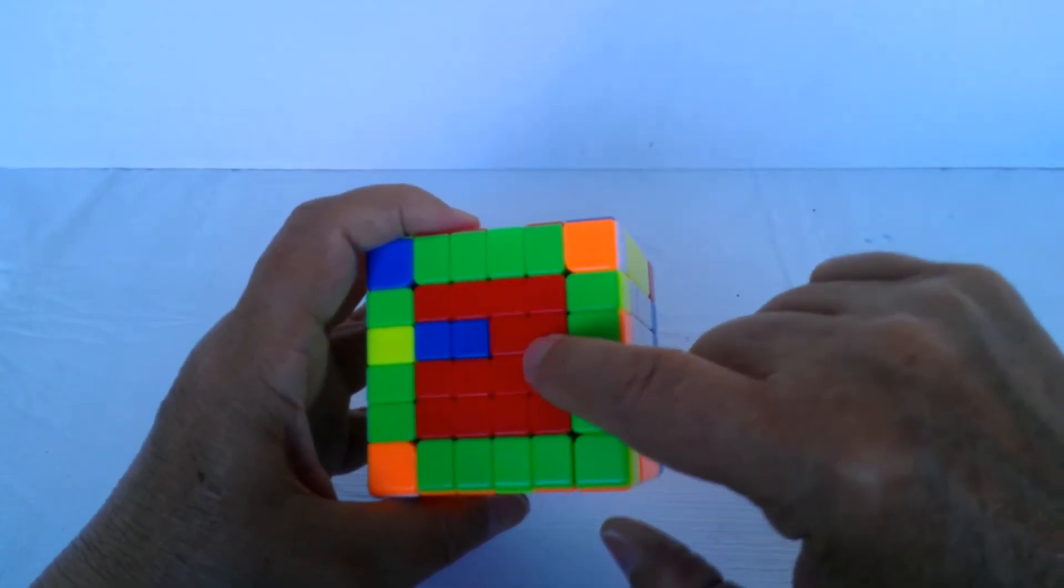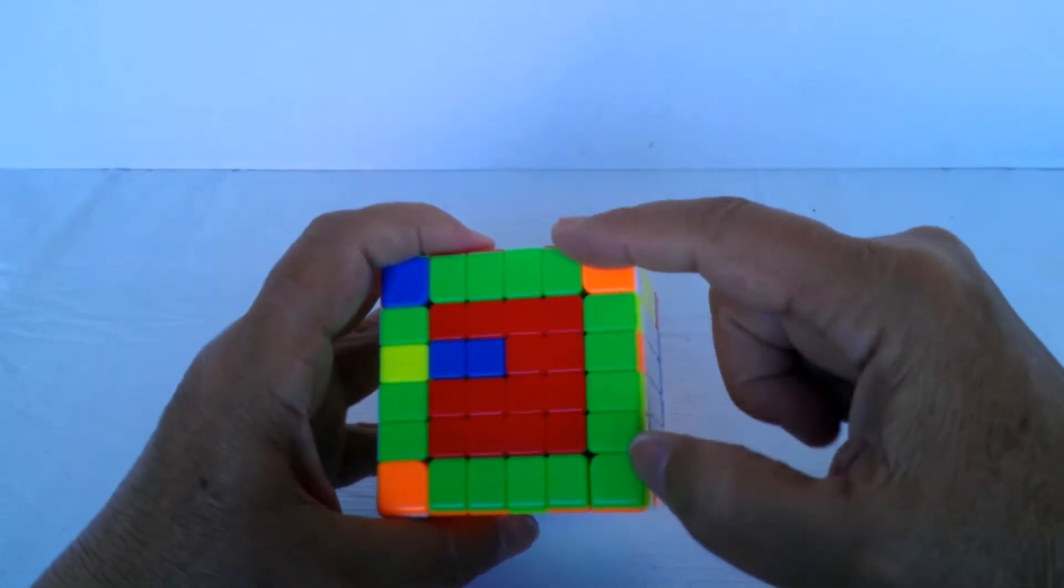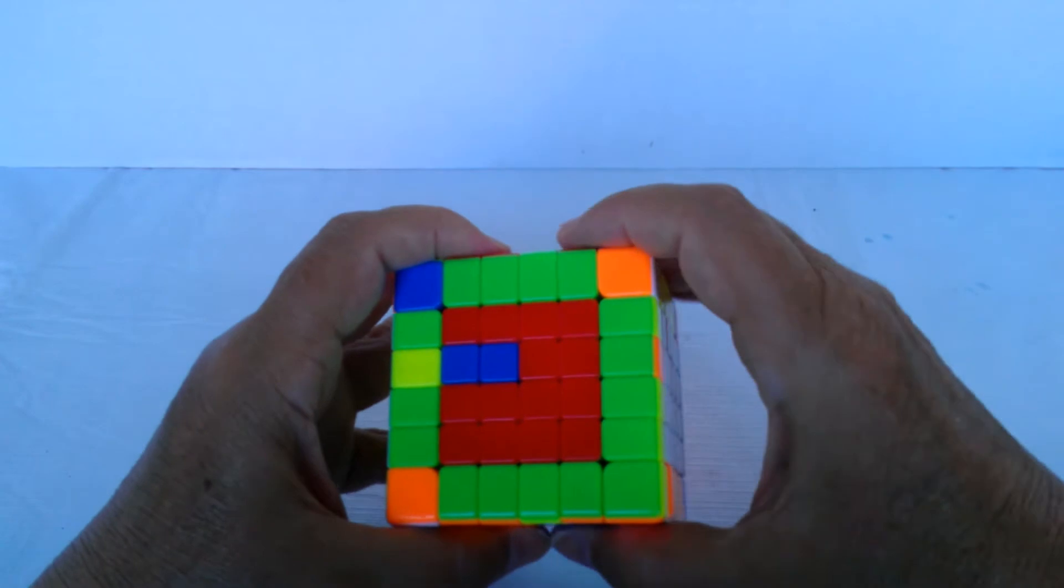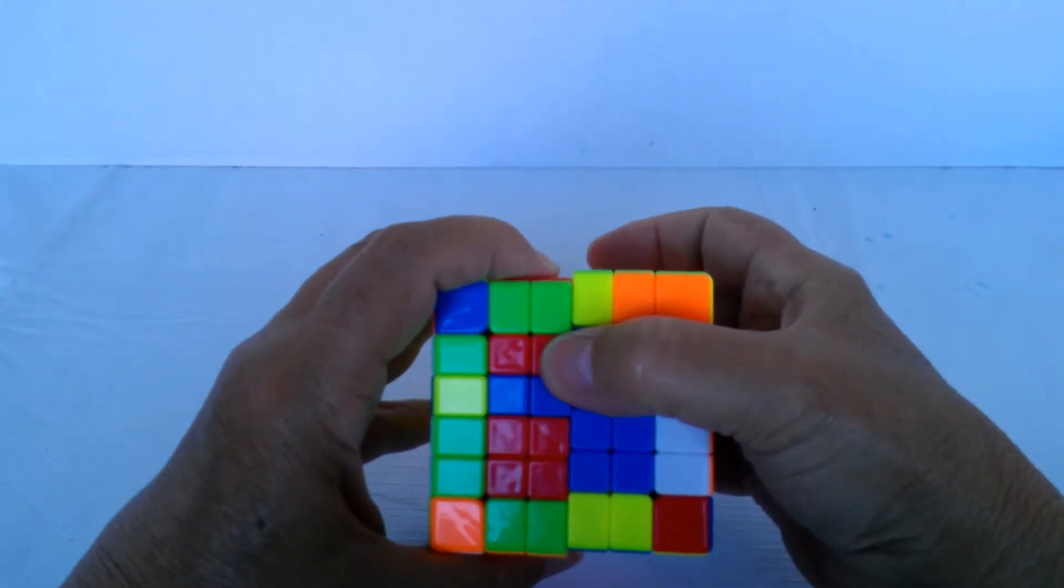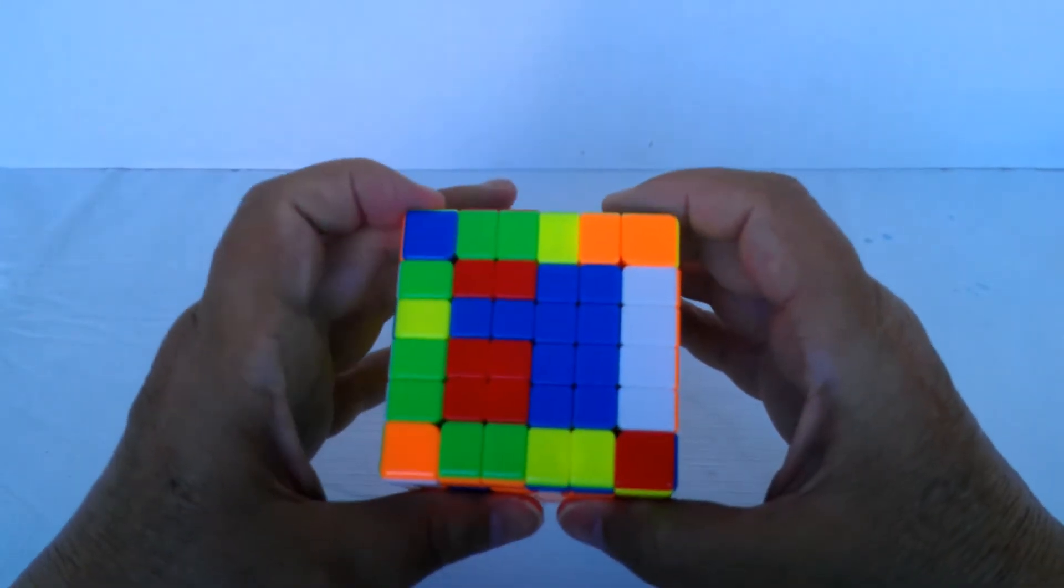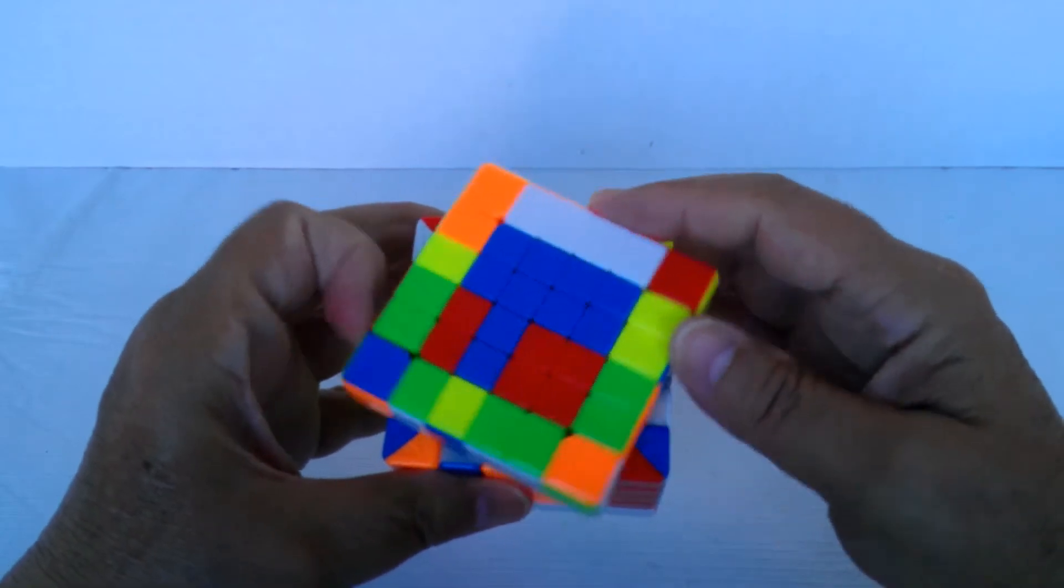And now since we moved two of them, instead of just moving one slice up and out of the way, we're going to move both of these up and out of the way just for a moment. Now we rotate this slice back counterclockwise.